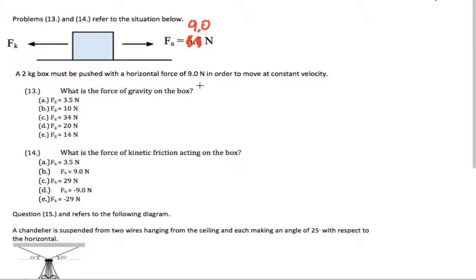So we're pushing a box with 9 Newtons. We need it to move at constant velocity. We want to know the force of gravity on the box, so let's go ahead and do that. So free body diagram: normal, weight, force of applied, and force of friction.